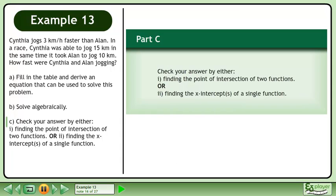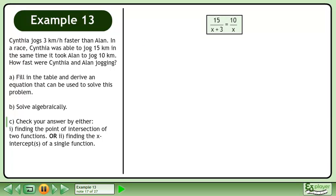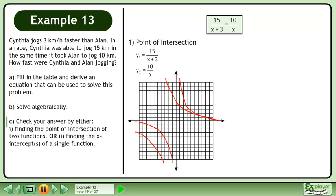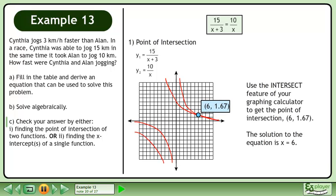In Part C, check your answer by either finding the point of intersection of two functions or finding the x-intercepts of a single function. Rewrite the equation from Part A. First, we'll find the point of intersection. Use a system of functions: y1 equals 15 over (x plus 3) and y2 equals 10 over x. Use your graphing calculator to draw the graphs, then use the intersect feature to get the point of intersection (6, 1.67).